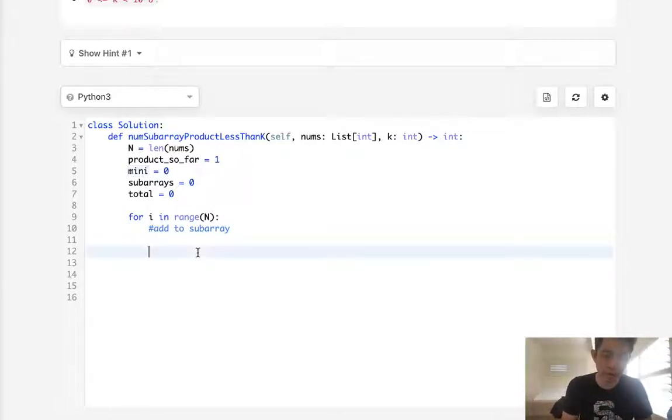Then we are going to move our mini pointer, our index to check to see if we need to move this pointer up. Because if that's the case, then we need to decrease our subarray and increase our index number.